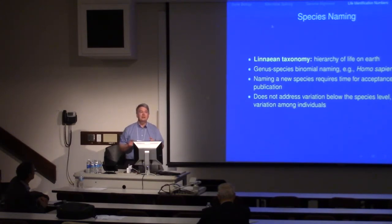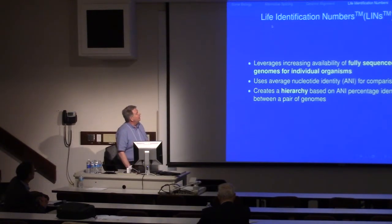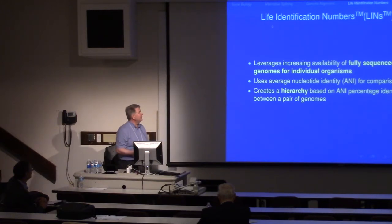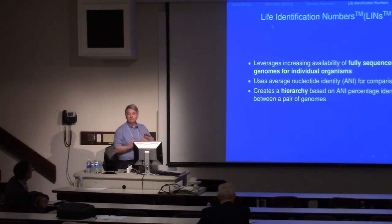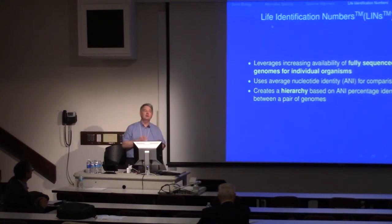Furthermore, we wanted to address variation among genomes at a level below species — at the level of individuals, in fact. We know that sequencing genomes is becoming cheaper and faster. We can use this to get genomes of bacteria, viruses, plants, and animals. When we have those genomes, we can compare them. In this case we're using average nucleotide identity for comparison, and using that comparison base we can determine which genomes are close to other genomes.